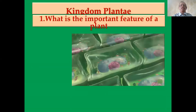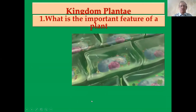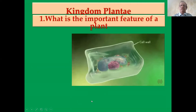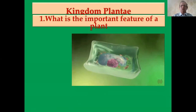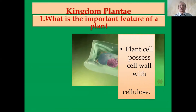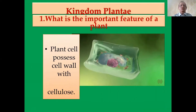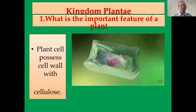First, we think about kingdom Plantae. What is the important feature of a plant? Plants have cells and they are eukaryotic. The plant cell possesses cell walls with cellulose. Cellulose is the major component found in plant cell walls.